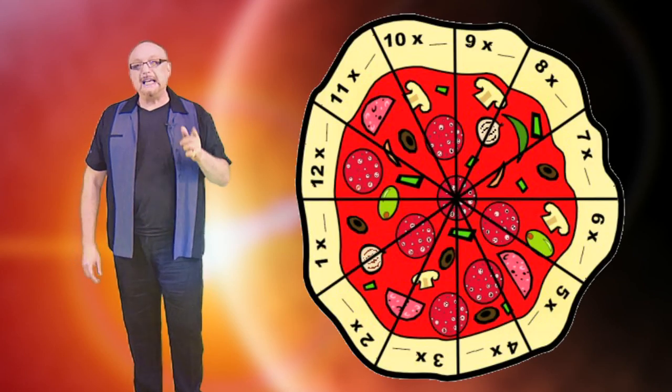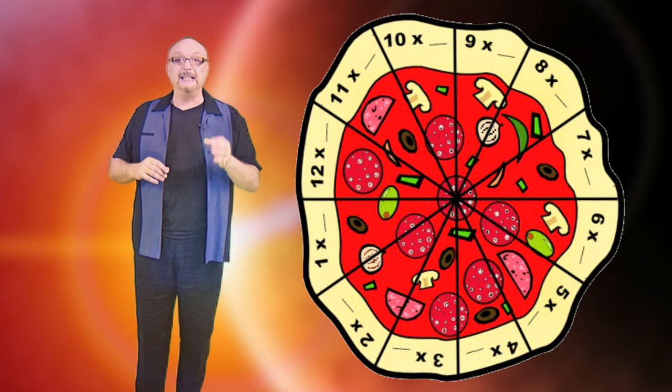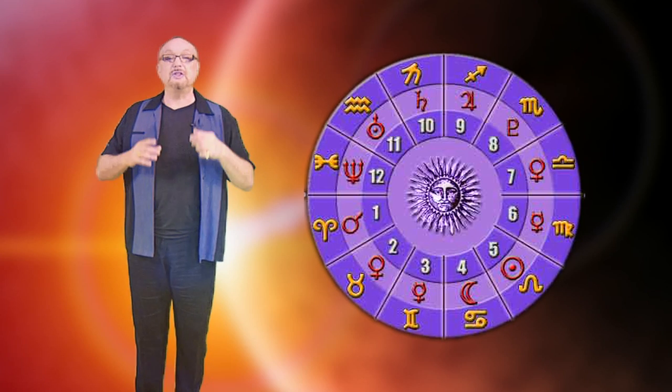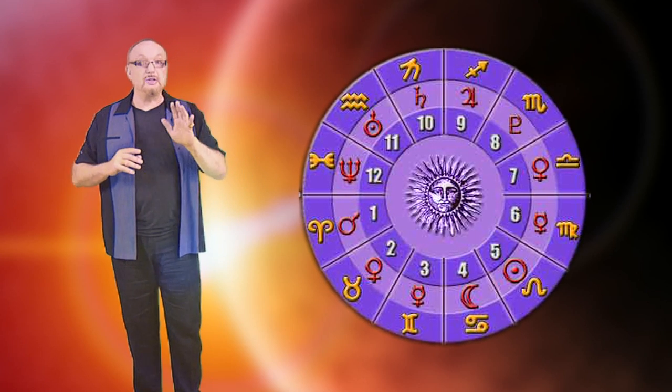And there are also 10 differently flavored meatballs on it. Each one of those meatballs is a different planet. So once again, each of the 12 slices of the pizza is a house of the horoscope.